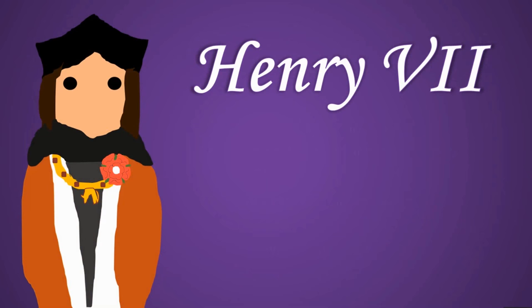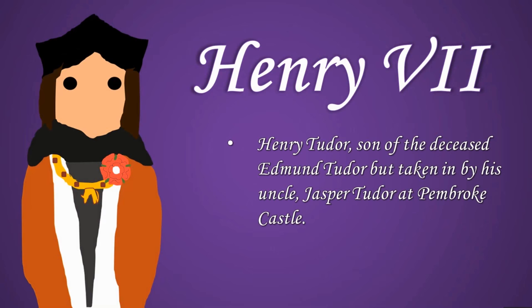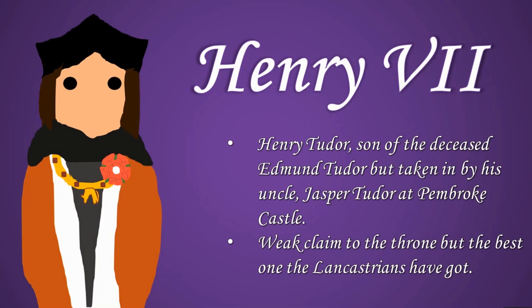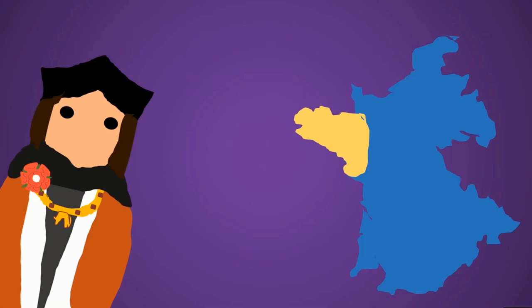Henry Tudor, at this time the Earl of Richmond, was the son of a deceased Lancastrian lord called Edmund Tudor, and was taken in by his uncle Jasper at Pembroke Castle in southwestern Wales. His claim to the throne was weak, but after the battles of Towton and Barnet, the last Lancastrians from the direct Lancastrian line had been wiped out, so they had to go to the next nearest line — the Tudor line through Margaret Beaufort. Henry had actually grown up in exile, because his uncle Jasper had fled the country with Henry after the defeat at Tewkesbury, fearing a Yorkist repercussion against Lancastrian lords.